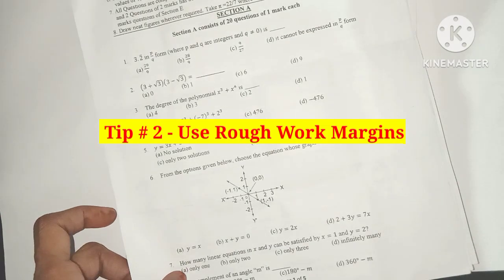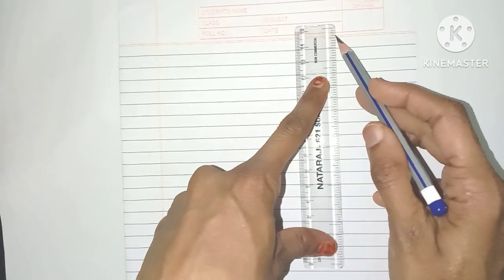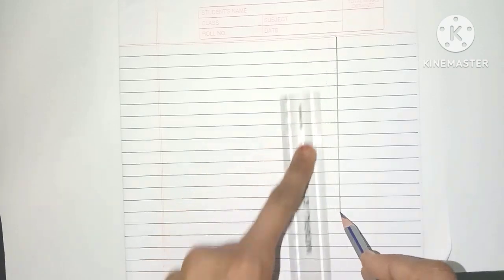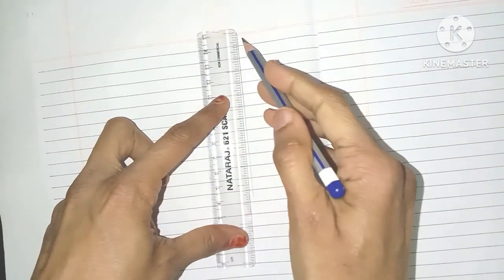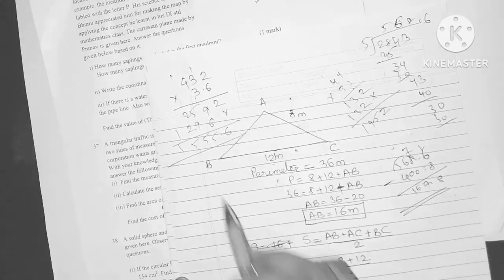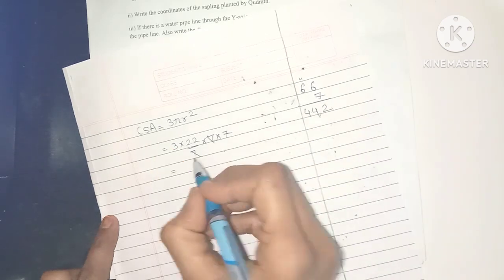The second tip is to use rough work columns. Once you get the answer paper, the first thing to do before you even start answering is to draw rough work margins on the right side of each page. So instead of doing calculations all over the pages, you will automatically do all those calculations in these margins.